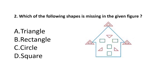Question number 2. Which of the following shapes is missing in the given figure? Option A triangle, option B rectangle, option C circle, option D square. The answer is option C — circle. There is no circle in this figure.